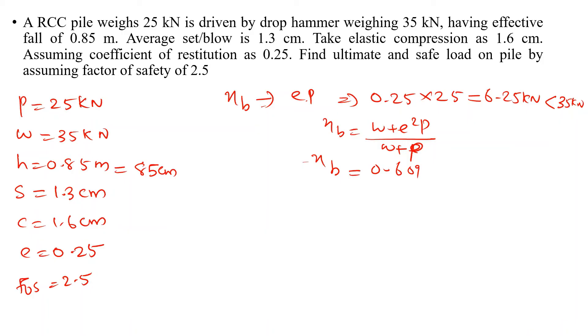If efficiency of hammer we assume as 1, that is 100%. Then substitute Qu equals W times h times eta_h times eta_b divided by s plus c/2. W is 35, h is 85, eta_h is 1, eta_b is 0.6909 divided by s is 1.3 plus 1.6 by 2. Then safe load is ultimate divided by factor of safety.